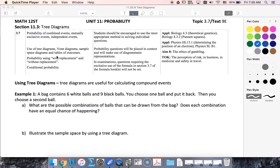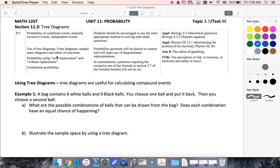In the last set of videos we looked at compound events and talked about independent and dependent. In this set of videos we're going to talk about how we can use tree diagrams to help us calculate those probabilities.